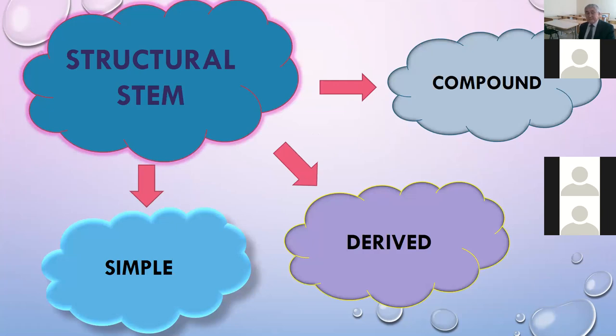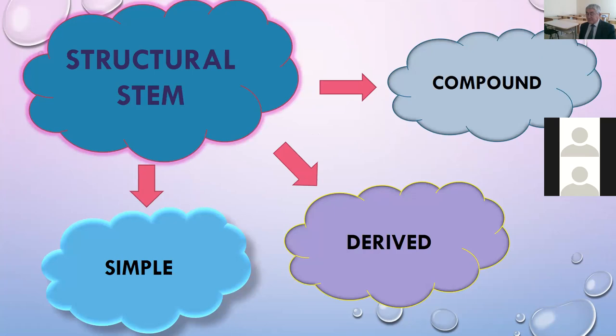A simple stem is a part of the word which is identical with the root morpheme and whose grammatical elements are external. For example, book, trend, teach, table, girl, boy, and so forth.